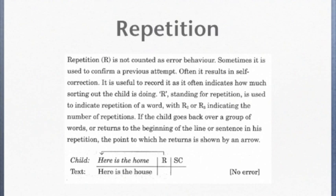To record repetitions, write an R and an arrow back to where the repetition started. If the child repeated a word or phrase more than once, write a subscript number for the number of times they repeated by the R. If you have a different way of recording repetitions, go ahead and continue to use your coding preference.